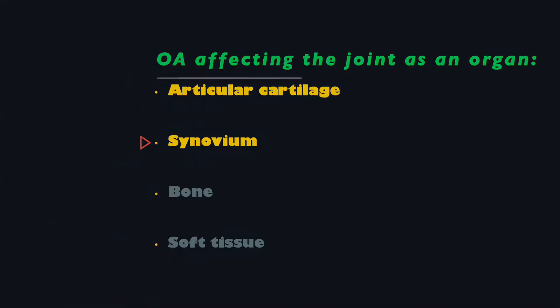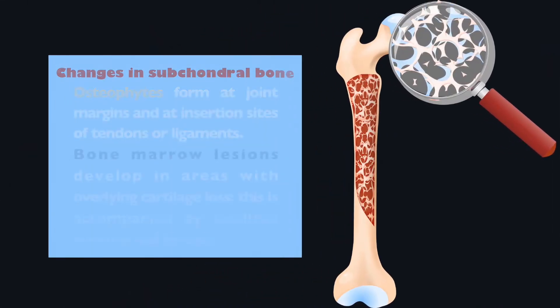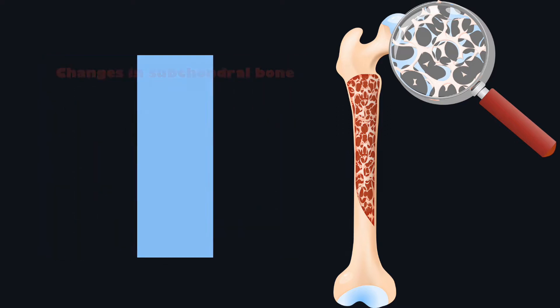At the bone, thickening of the subchondral bone — also known as bone sclerosis — occurs due to the increased production of collagen. Osteophytes begin to form at the joint margins, often at the insertion sites of tendons or ligaments, and bone marrow lesions also develop in areas with overlying cartilage loss and where mechanical loads are greatest, accompanied by localised necrosis and fibrosis.